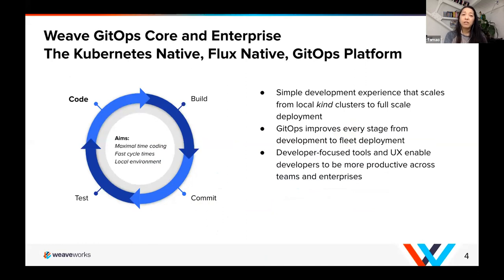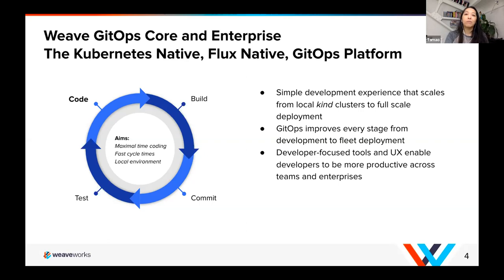The open source Flux we talked about, as well as Weave GitOps — which you'll be using — is a free and open source tool to get you started really quickly. It is Kubernetes native and Flux native, so it's an opinionated way to do Flux so you can get started really quickly. We also had a recent GitOps Days event where companies showed why they have chosen Flux as their tool to deliver GitOps to their customers — companies like Microsoft, Amazon, VMware, Red Hat, and D2IQ.